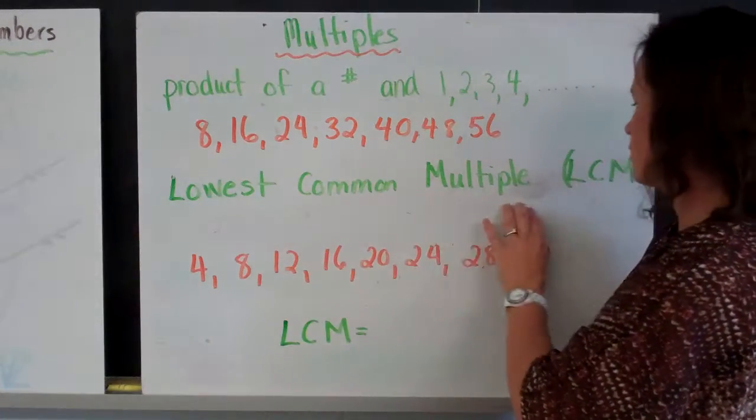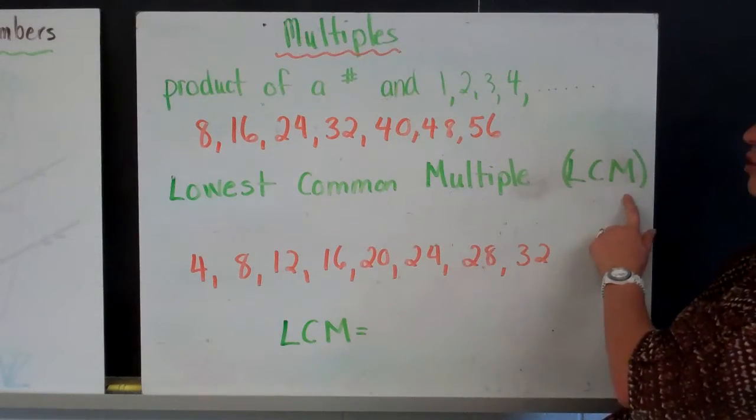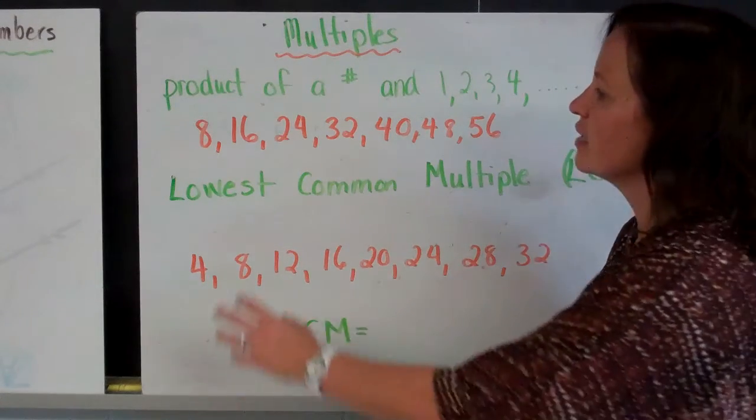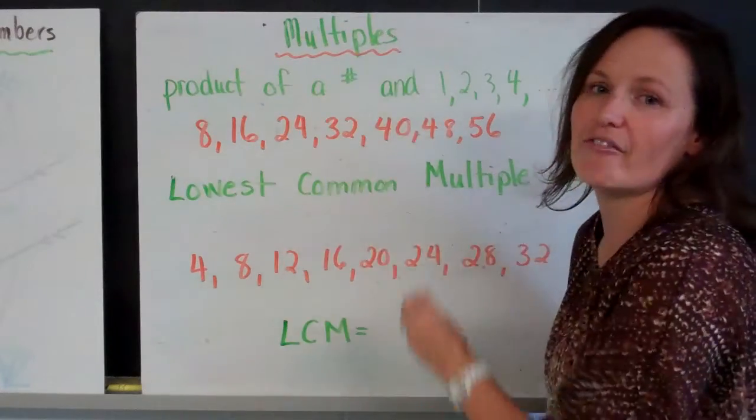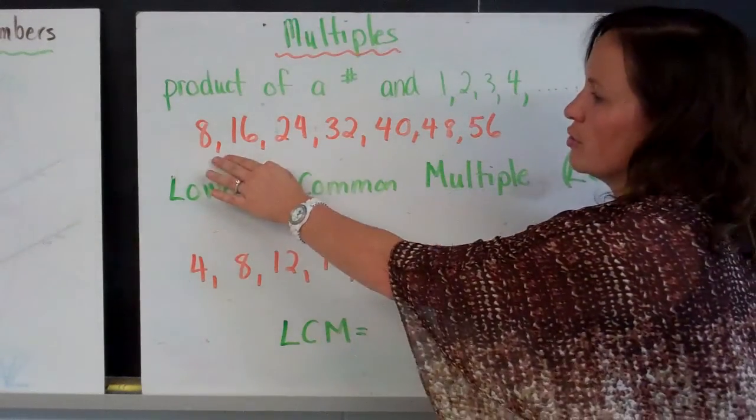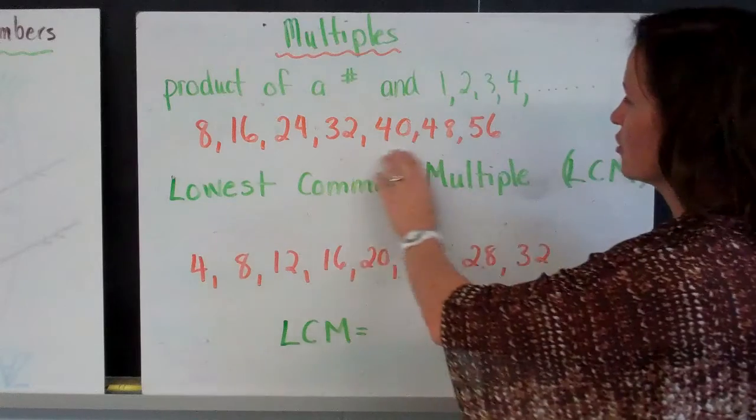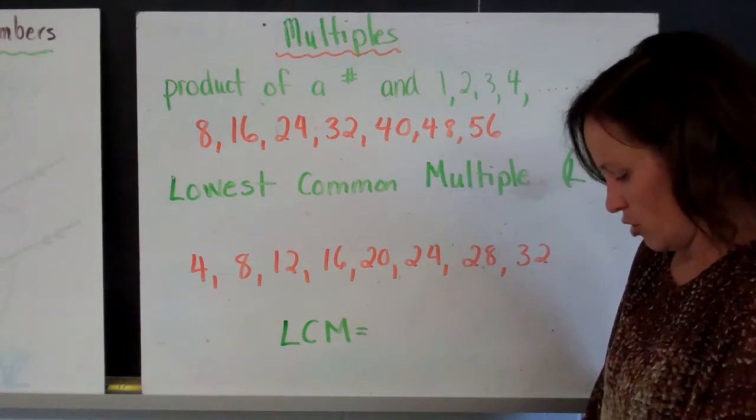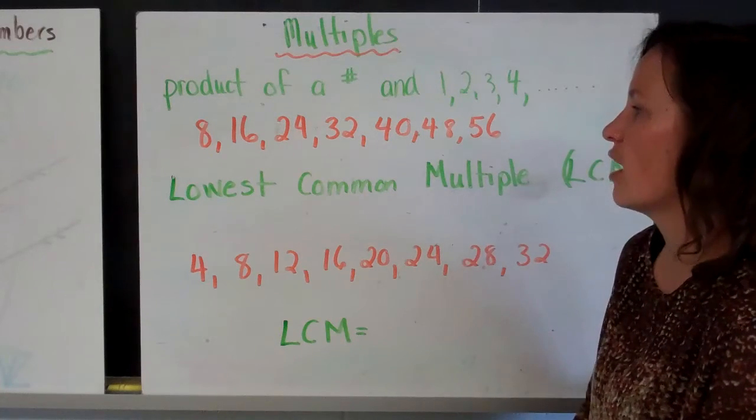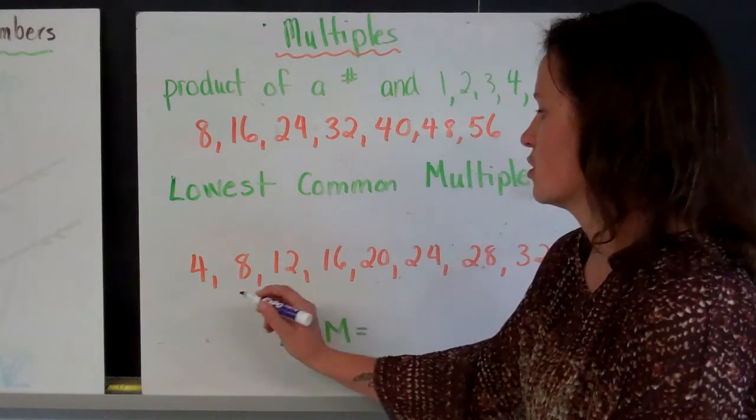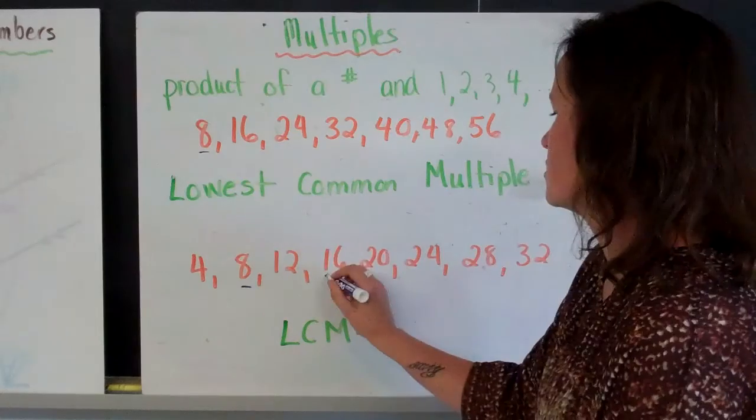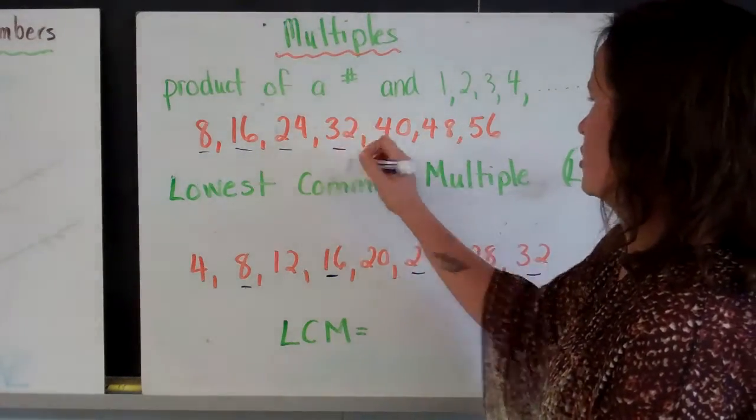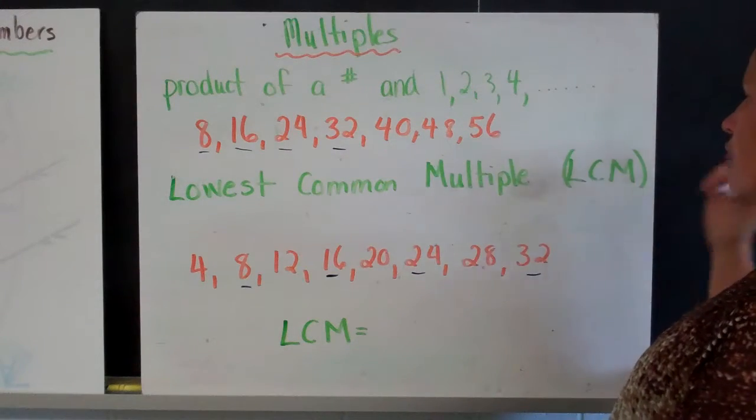Lowest common multiple, or LCM, which you can write for short form, is when you're comparing two or more numbers and you're finding the lowest multiple that they have in common. So I'm going to use 8 and 4. So 8 is already written out here, and the multiples of 4 are written out here. So the first step I would do is identify all the common multiples. So 8, 8, 16, 16, 24, 24, 32, 32, and it would go on and on.